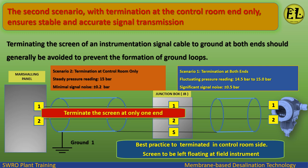Scenario 2, termination at control room only, produces a steady pressure reading of 15 bar with minimal signal noise of plus or minus 0.2 bar. Best practice is to terminate the screen at the control room side only, with the screen left floating at the field instrument end. Thank you for watching this video.